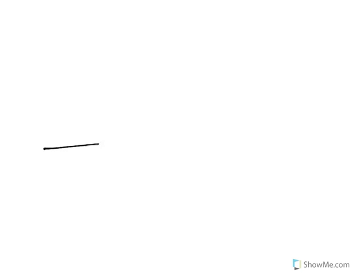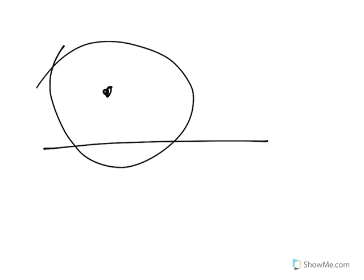These two angles have to be equal, and since they add up to 180 degrees, they have to be 90 degrees. So this line is the perpendicular bisector. It also works if there's a point not on the line and you wanted to find a line perpendicular to that line through that point — just make a circle of any radius that hits the line twice, and then do the perpendicular bisector of that chord.